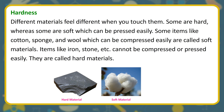Hardness: different materials feel different when you touch them. Some are hard, whereas some are soft and can be pressed easily. Items like cotton, sponge, and wool, which can be compressed easily, are called soft materials. Items like iron and stone cannot be compressed or pressed easily and are called hard materials.